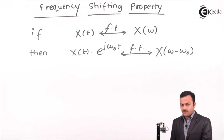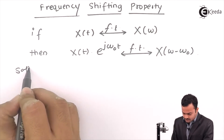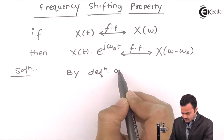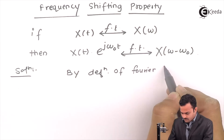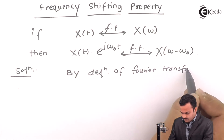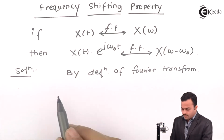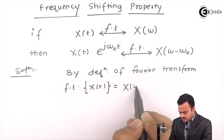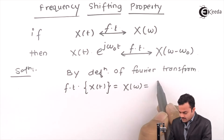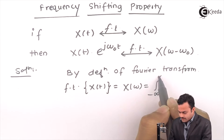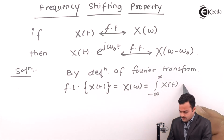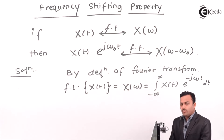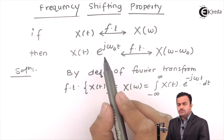We are going to use the definition of a Fourier transform, which states that the Fourier transform of any signal x(t) — which is X(ω) — is given by the integral from minus infinity to infinity of x(t) multiplied by e raised to minus j·ω·t, dt. Now, what we want is the Fourier transform of x(t)·e raised to j·ω₀·t.